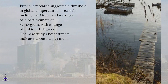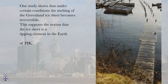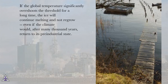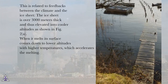Our study shows that under certain conditions the melting of the Greenland ice sheet becomes irreversible. This supports the notion that the ice sheet is a tipping element in the Earth system, says team leader Andrei Ganapolsky of PIK. If the global temperature significantly overshoots the threshold for a long time, the ice will continue melting and not regrow, even if the climate would, after many thousand years, return to its pre-industrial state. This is related to feedbacks between the climate and the ice sheet: the ice sheet is over 3,000 meters thick and thus elevated into cooler altitudes. When it melts, its surface comes down to lower altitudes with higher temperatures, which accelerates the melting.